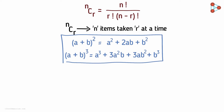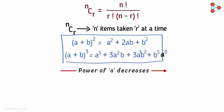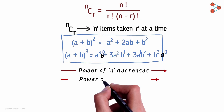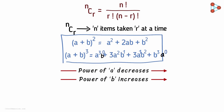We observe that the power of a decreases and the power of b increases in each term. For a, the powers are 3, 2, 1, 0, and for b, the powers are 0, 1, 2, 3. Let's try and generalize a formula for this.